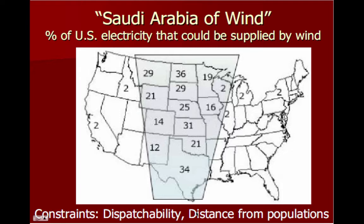There's a huge amount of potential for wind energy in the Midwest. The upper Midwest states — Iowa, Minnesota, North and South Dakota, Montana, Wyoming — this is the percentage of total U.S. electricity that could be supplied by the wind power potential in each of those states. Just one state alone, North Dakota, could supply 36 percent of the whole U.S. energy just from that one state.